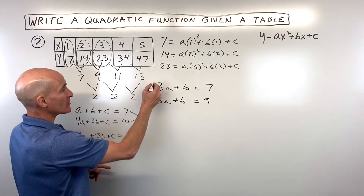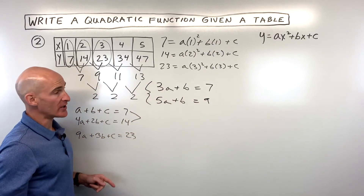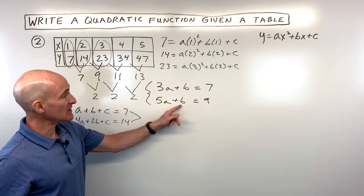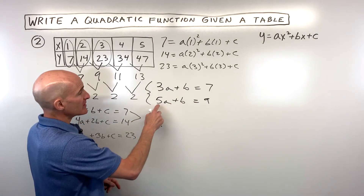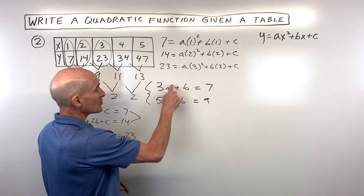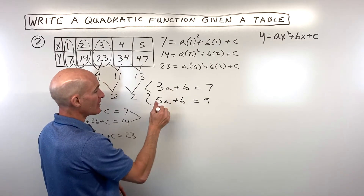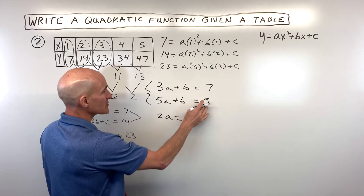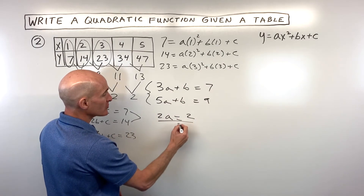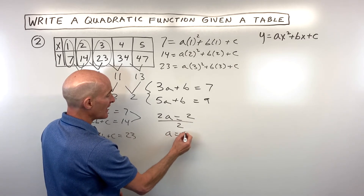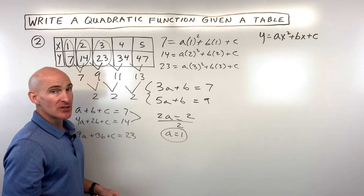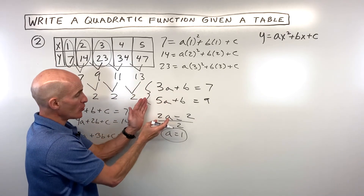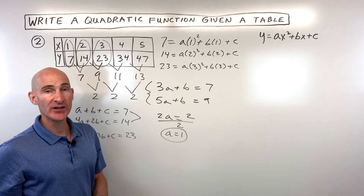Now we have two variables and two equations. To eliminate b, subtract the top equation from the bottom: 5a minus 3a is 2a, b minus b is 0, and 9 minus 7 is 2. Dividing both sides by 2, a equals 1. So we went from three variables and three equations, to two, to one.